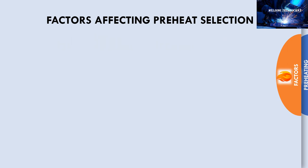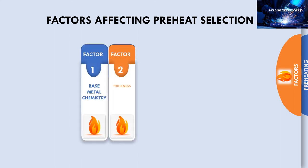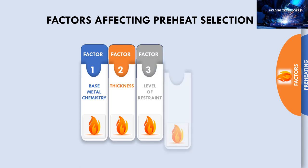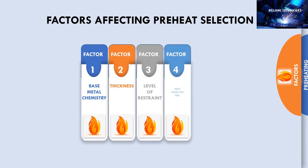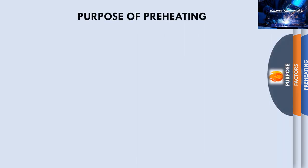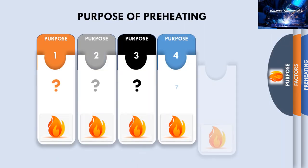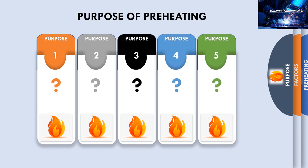To conclude, there are five factors affecting preheat selection: first is base metal chemistry, second is thickness, third is level of restraint, fourth is heat from the arc, and fifth is the diffusible hydrogen of the weld metal. In the upcoming video we shall study about the purpose of preheating.